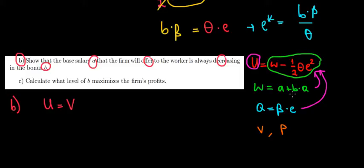What's the wage? A plus B times the quantity, right? And the quantity is also beta times E. Meaning we'll do all this substitution right away. A plus B times beta times the effort level, and we calculated the effort level in the previous video.